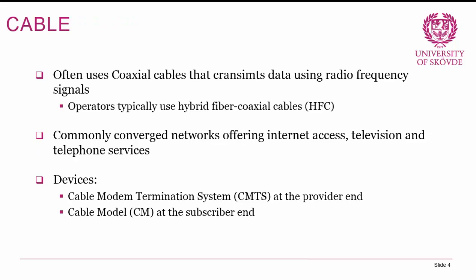The first broadband option is cable technology. Cable often uses coax cables that transmit data using radio frequency signals, and operators typically also use hybrid fiber coax cables, or HFC, for high-speed backbone networks. These are commonly converged networks offering internet access, television and telephone services. The devices required include cable modem termination systems, or CMTS, at the provider end, and a cable modem at the subscriber end.